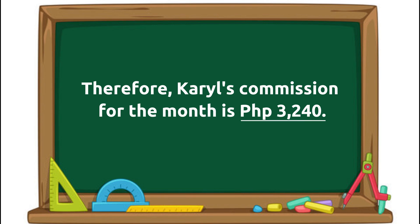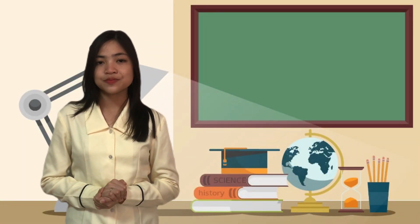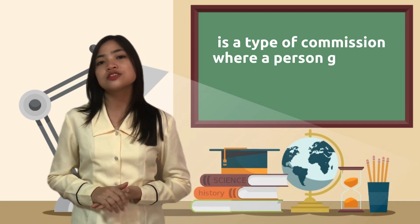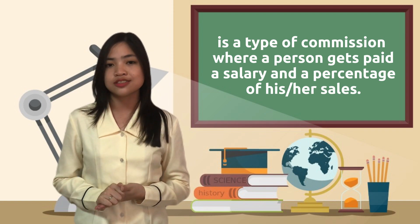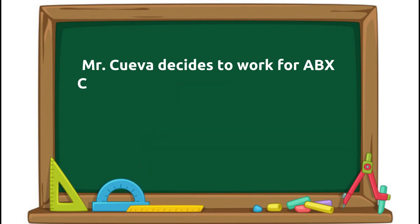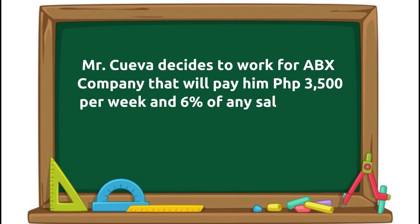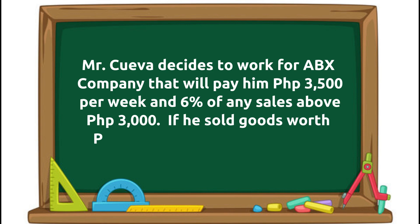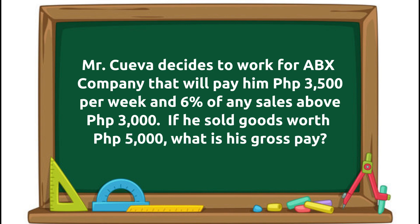Let's move on to the second type of commission. Salary plus commission is a type of commission where a person gets paid a salary and a percentage of his or her sales. Mr. Cueva works for ABX company that pays him 3,500 pesos per week and 6% of any sales above 3,000 pesos. If he sold goods worth 5,000 pesos, what is his gross pay?